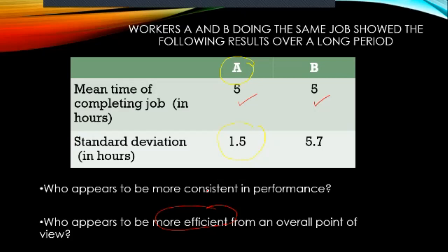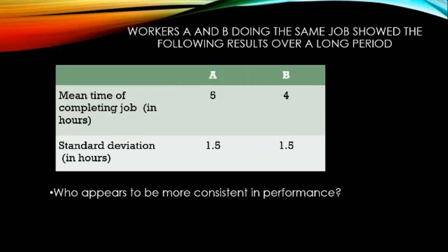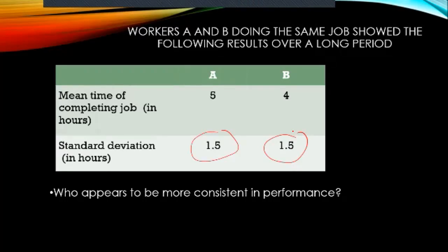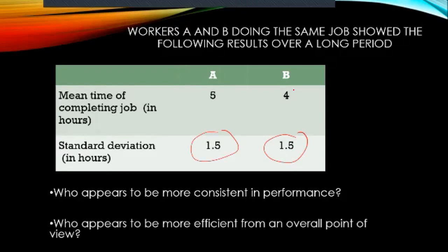Since both workers have the same mean time of 5 hours, neither is more efficient — they are equally efficient. When you ask who is more efficient, we look at the mean time, not the standard deviation. Efficiency means finishing the task in lesser time. In the next scenario, worker A has a mean of 5 hours and worker B has a mean of 4 hours with the same standard deviation — both are equally consistent, but worker B is more efficient.